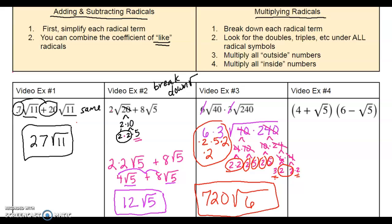The last problem in this section is multiplying. When we have two terms being multiplied, we call this FOIL — double distributing. We take the first two numbers and multiply them.